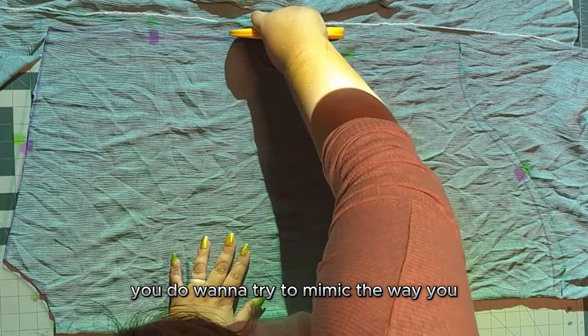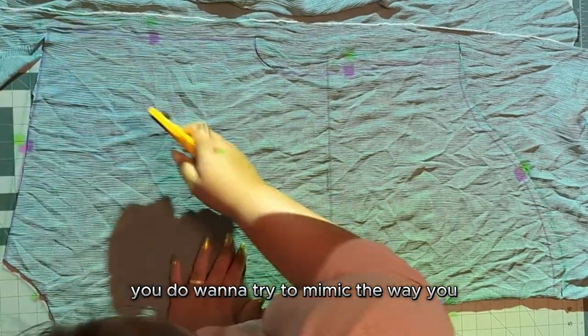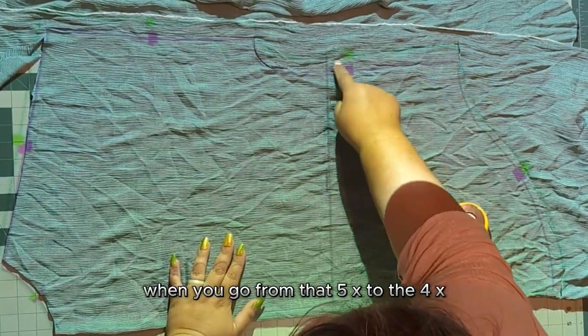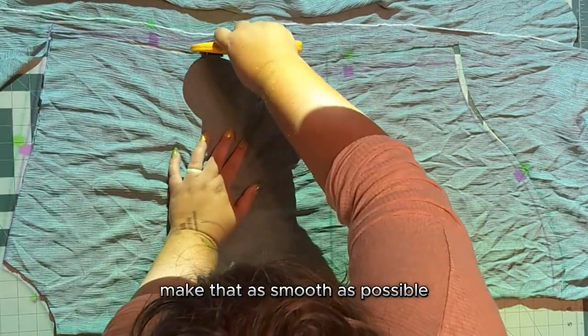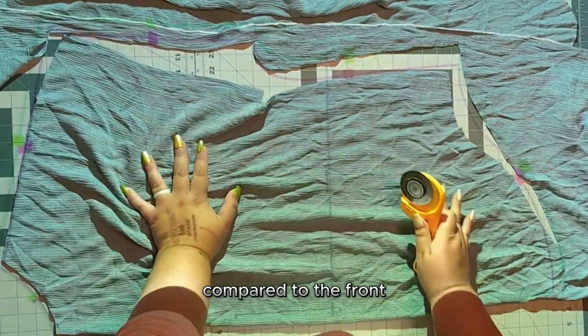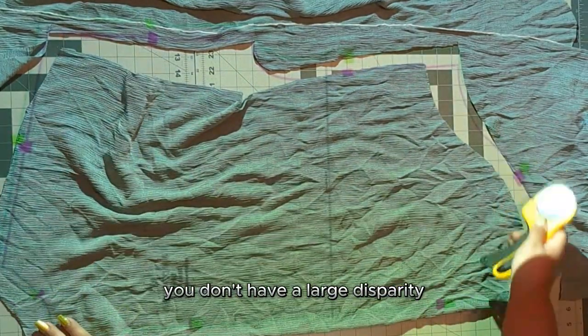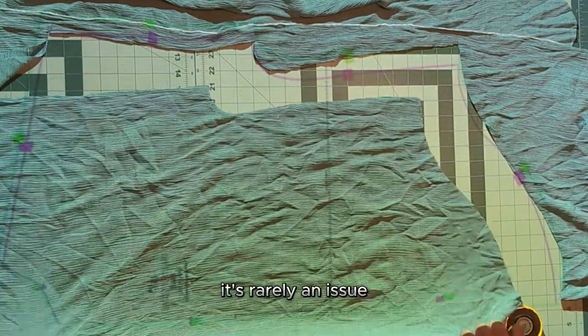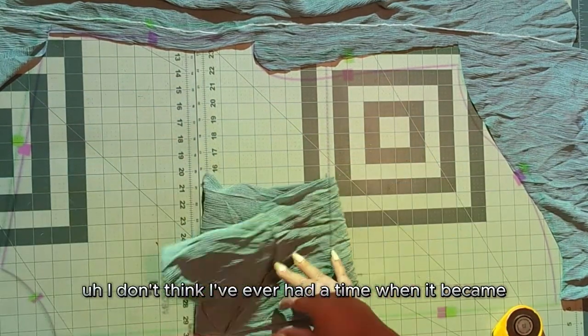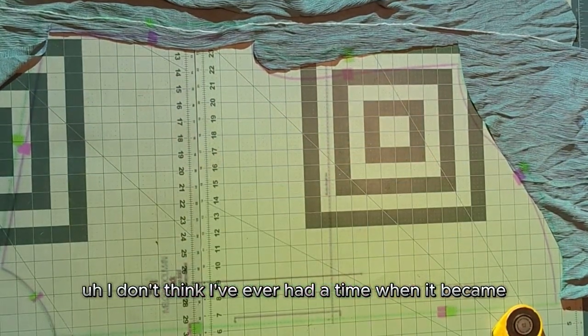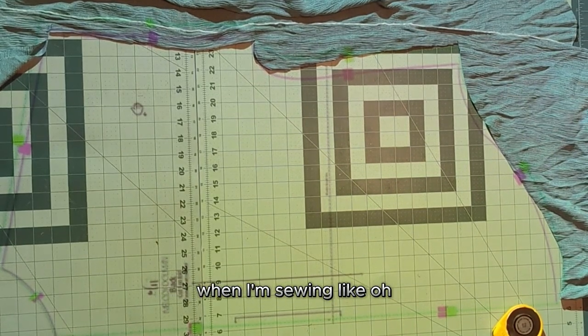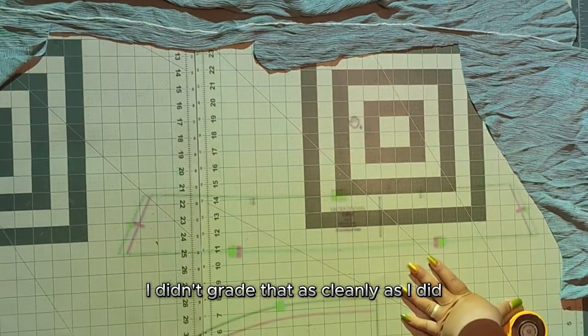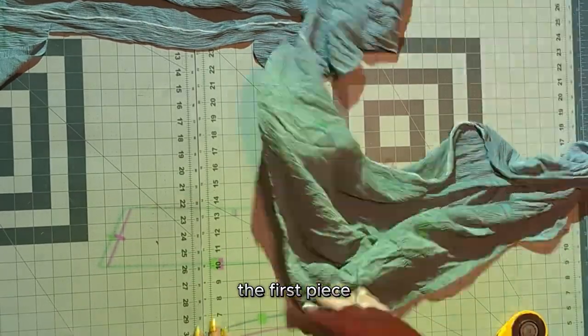You do want to try to mimic the way you grade in when you go from that 5x to the 4x, you want to try to make that as smooth as possible compared to the front so that when you're sewing it together, you don't have a large disparity. It's rarely an issue. I don't think I've ever had a time when it became like a big problem, but I do notice it sometimes when I'm sewing, like, oh, I didn't grade that as cleanly as I did the first piece.